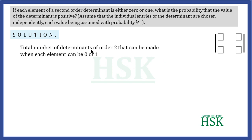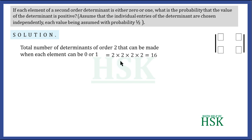The total number of second order determinants that can be made with each element being 0 or 1 equals the number of ways in which 4 entries can be made. Because each entry can be 0 or 1, there are 2 possible ways for each entry, and we have 4 entries. So the total number of determinants is 2 × 2 × 2 × 2 = 16.